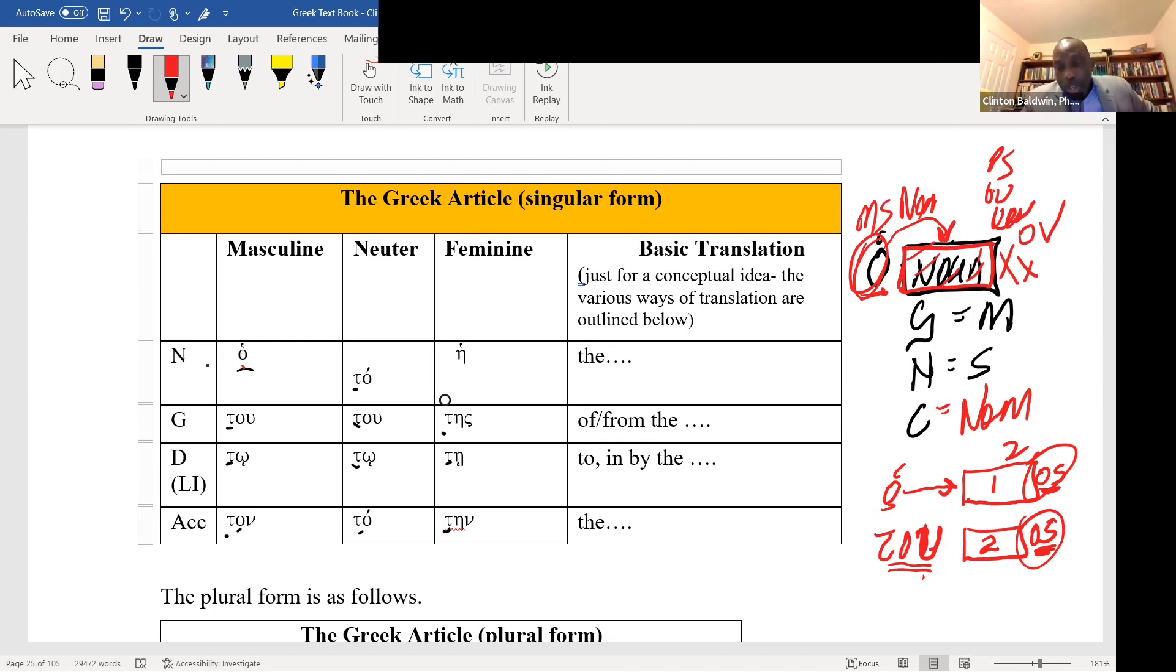If you do not know this, you are sentenced to memorize hundreds of endings. Maybe not a hundred, but a hundred or more, or hundreds of endings. So this is a shortcut. The article is a shortcut. Very important.